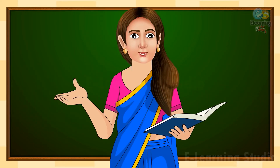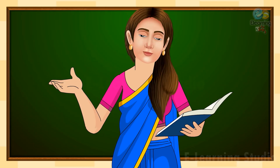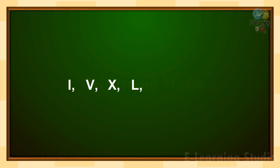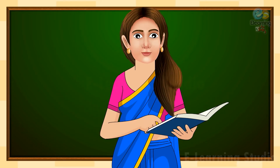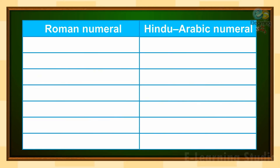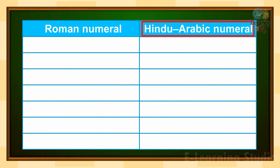Children, the Romans used seven basic symbols: the letters I, V, X, L, C, D, and M. You can see these basic symbols with their corresponding Hindu-Arabic numerals on screen. On one side we have Roman numerals and on the other side we have Hindu-Arabic numerals.